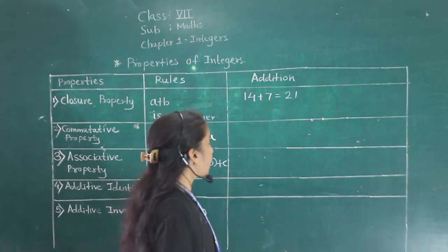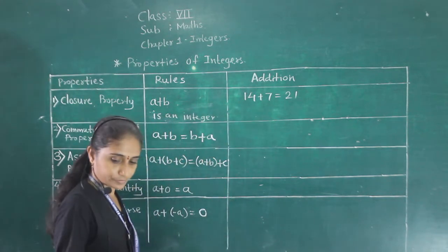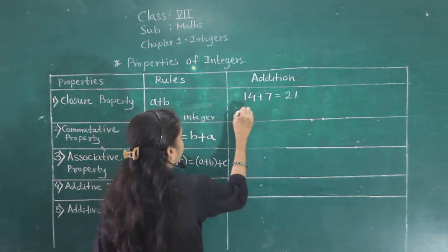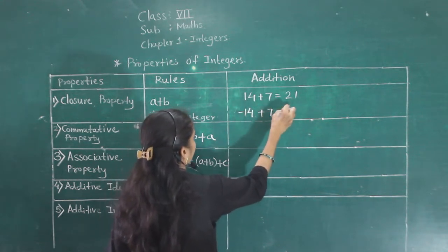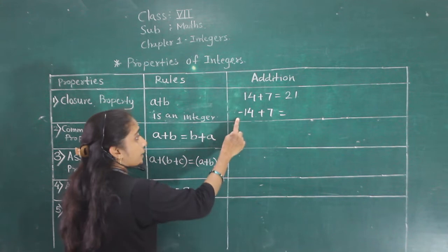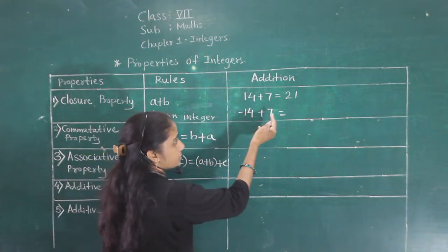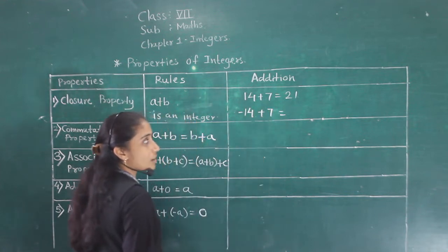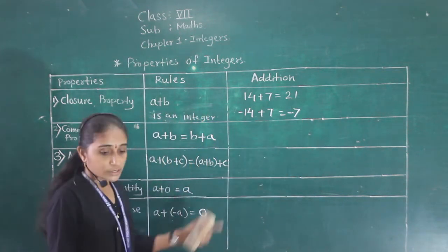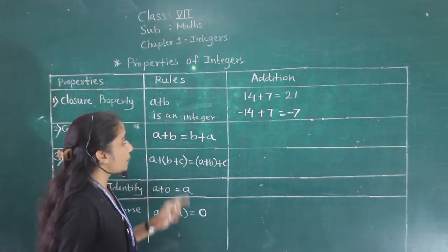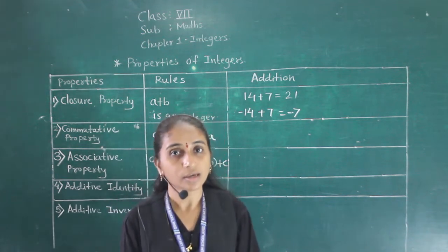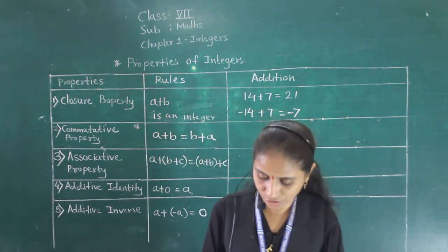We will see if this property works with integers also. For example, A is minus 14 and B is plus 7. Minus 14 plus 7: we subtract 7 from 14, so the answer is negative 7, which is also an integer. So integers are closed under addition.